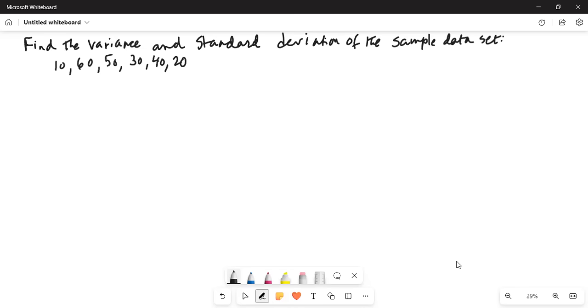Find the variance and standard deviation of the sample data set. So solution, let me change the color of the ink. Find sample mean, find sample mean x̄.